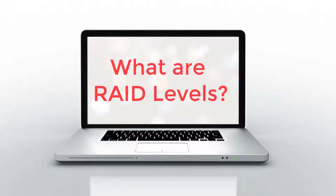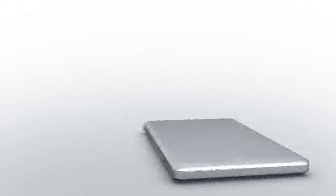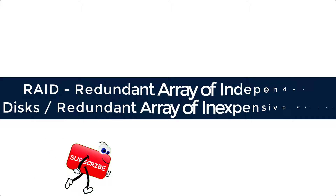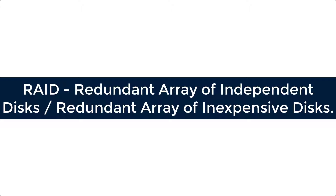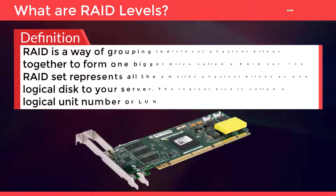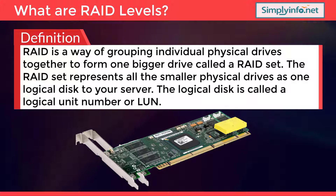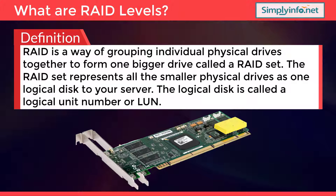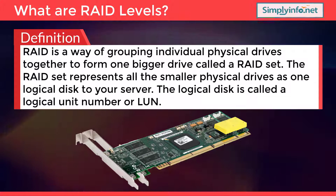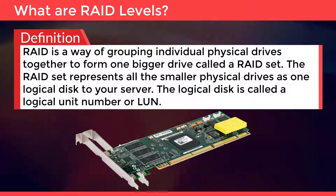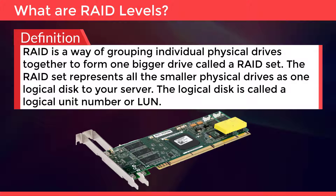What are RAID levels? RAID is a way of grouping individual physical drives together to form one bigger drive called a RAID set. The RAID set represents all the smaller physical drives as one logical disk to your server. The logical disk is called the logical unit number, or LUN.